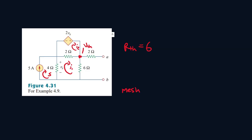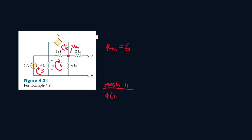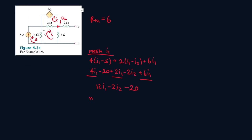And the current passing going around here will just be 5 amps because of this. So mesh I1 will be 4 I1 minus 5 plus 2 I1 minus I2 plus 6 I1. Now let's FOIL it. 4 I1 minus 20 plus 2 I1 minus 2 I2 plus 6 I1. Select like terms. It will be 12 I1 minus 2 I2 minus 20. Now let's do our last mesh. Mesh I2.